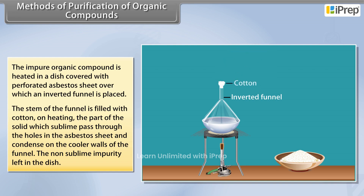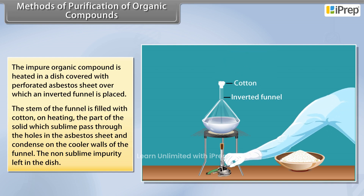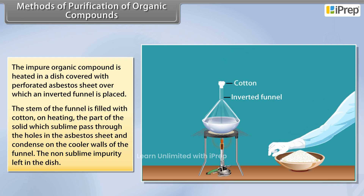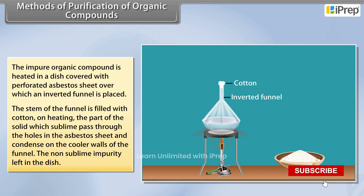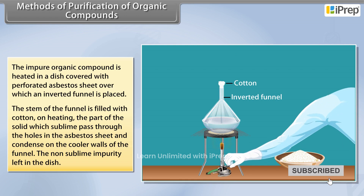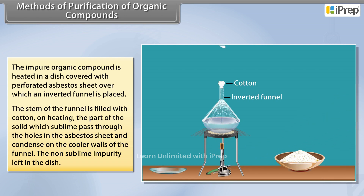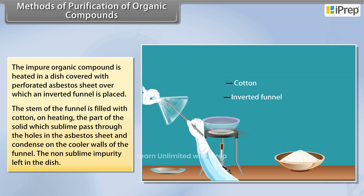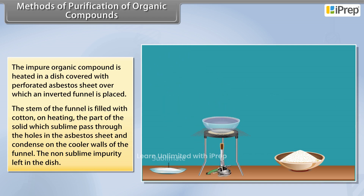The stem of the funnel is filled with cotton. On heating, the part of the solid that sublimes passes through the holes in the asbestos sheet and condenses on the cooler walls of the funnel. The non-sublimable impurity is left behind in the dish.